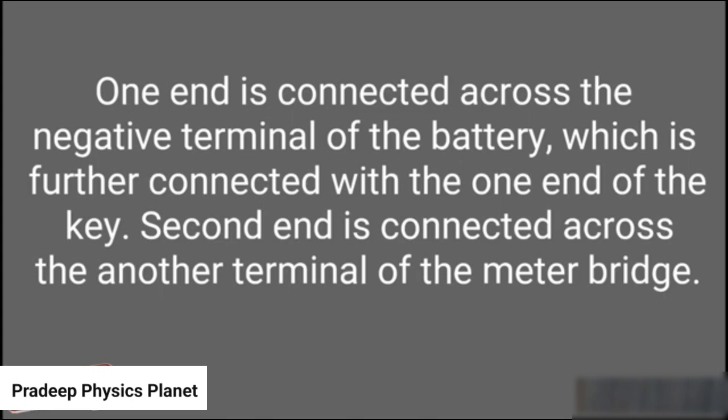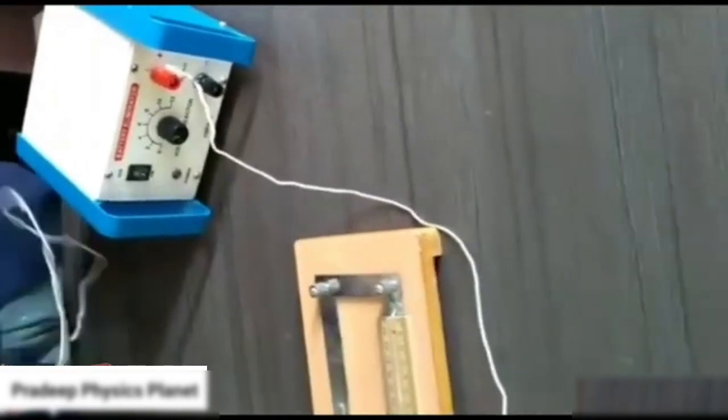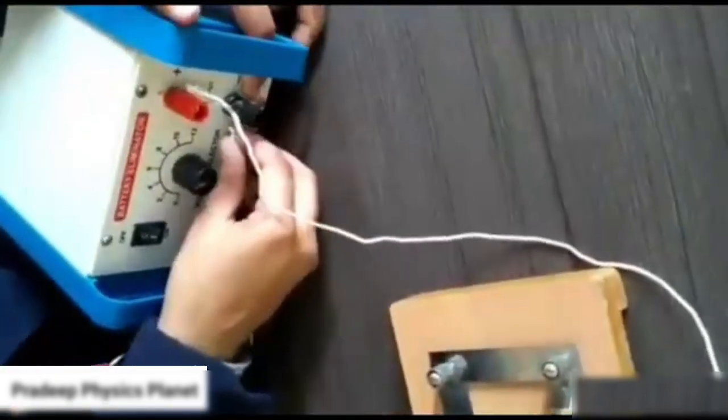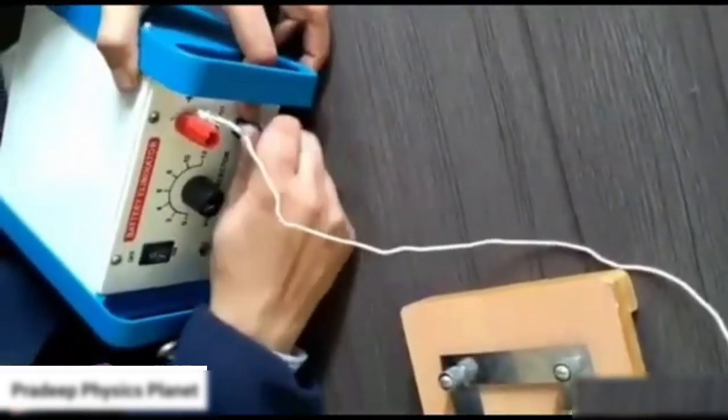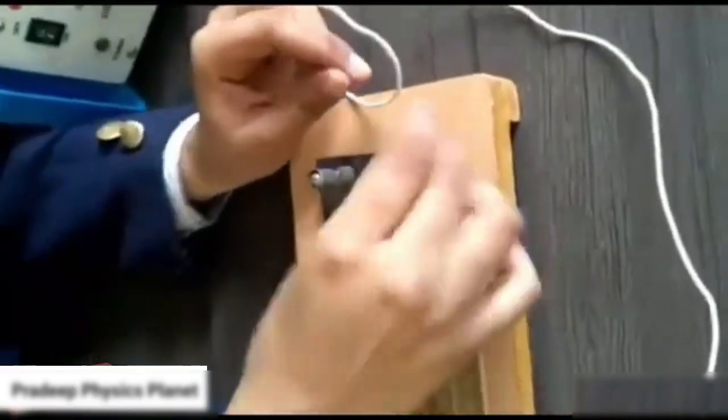After that, we connect the wires through the battery. The second end is connected across the positive terminal, and the negative terminal is connected across the another terminal of the meter bridge.